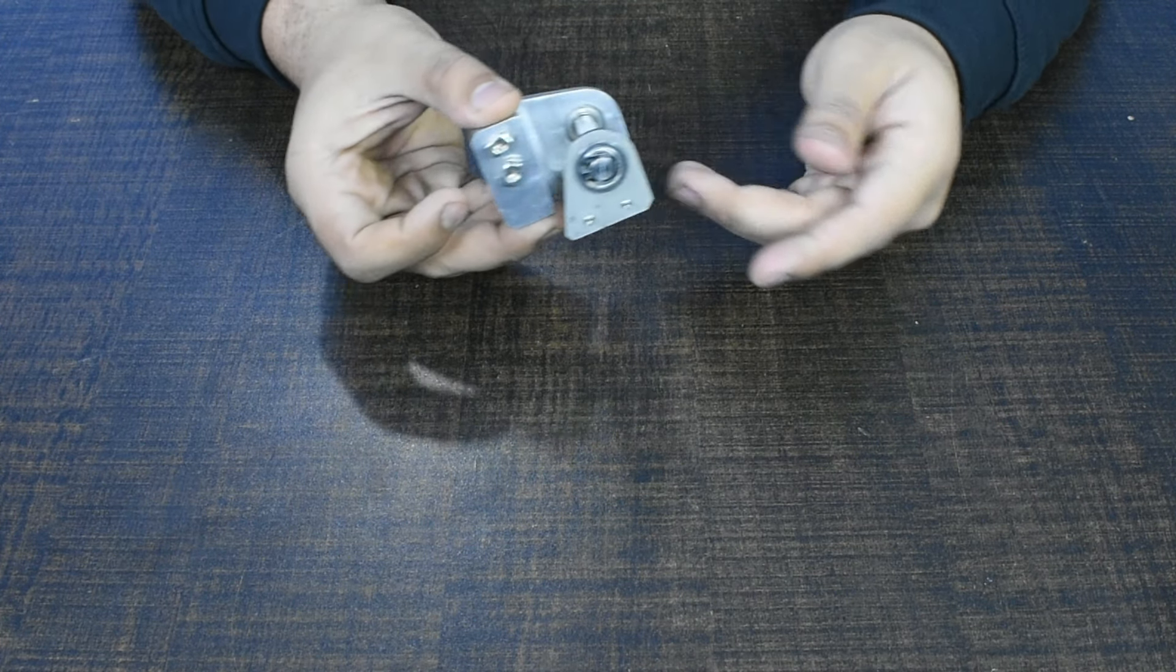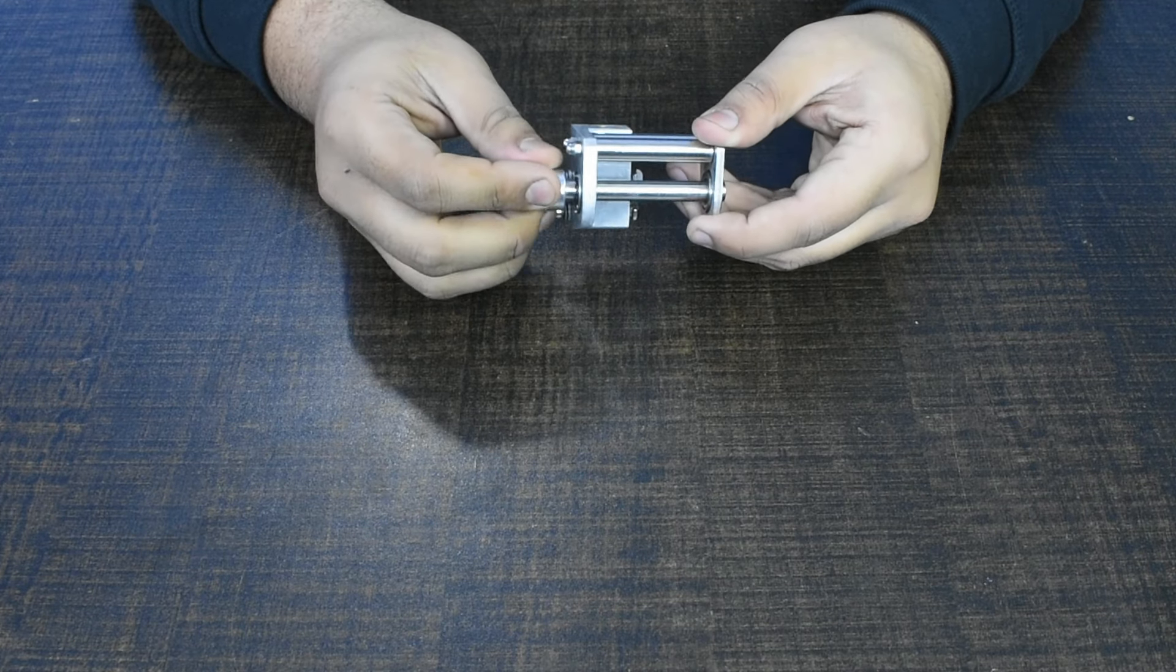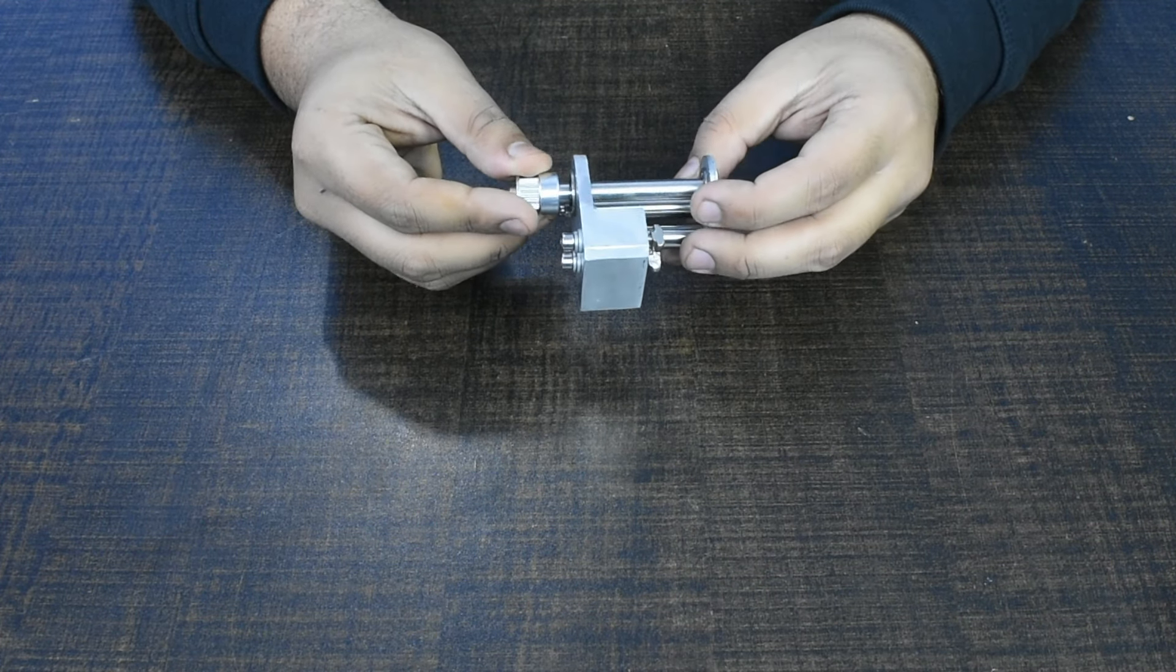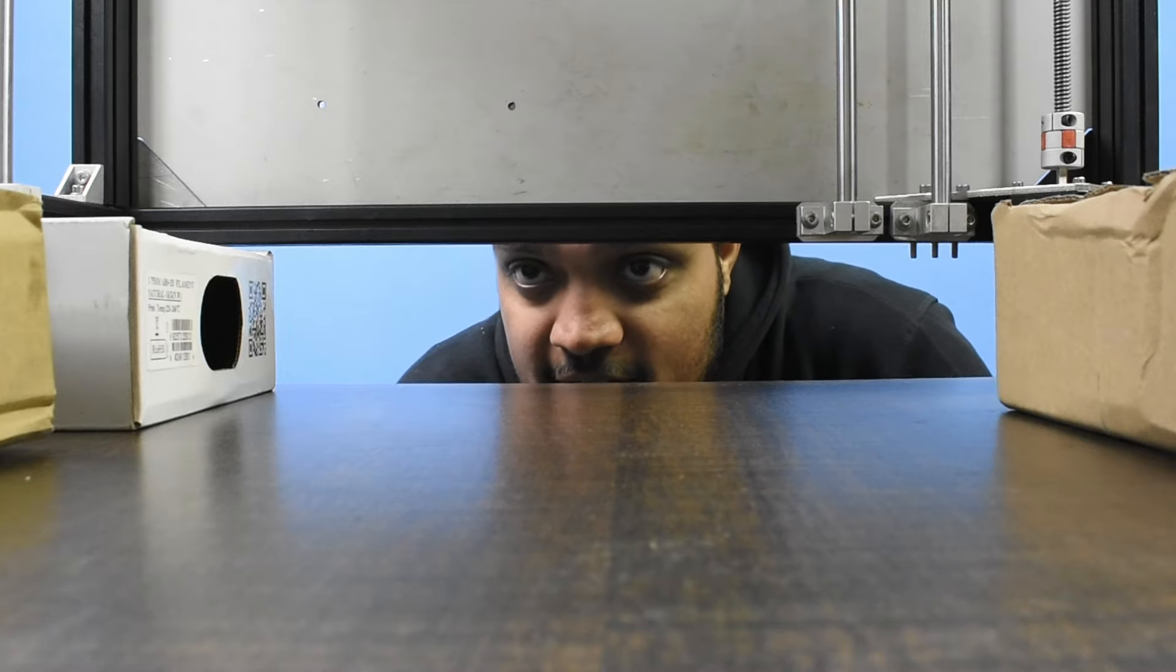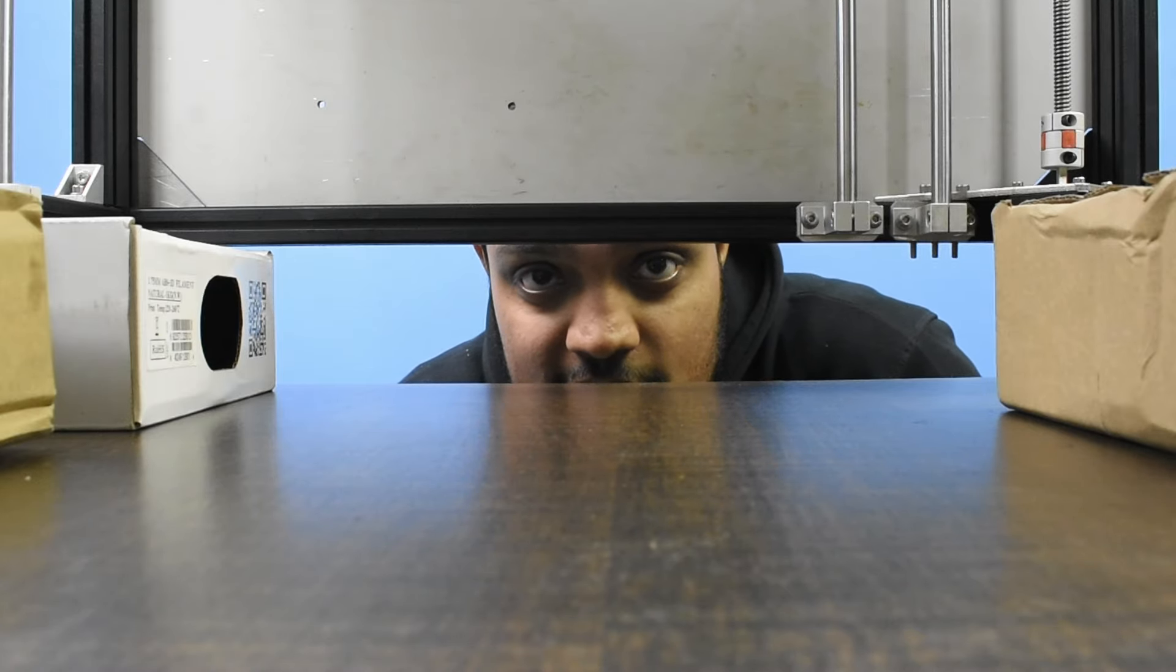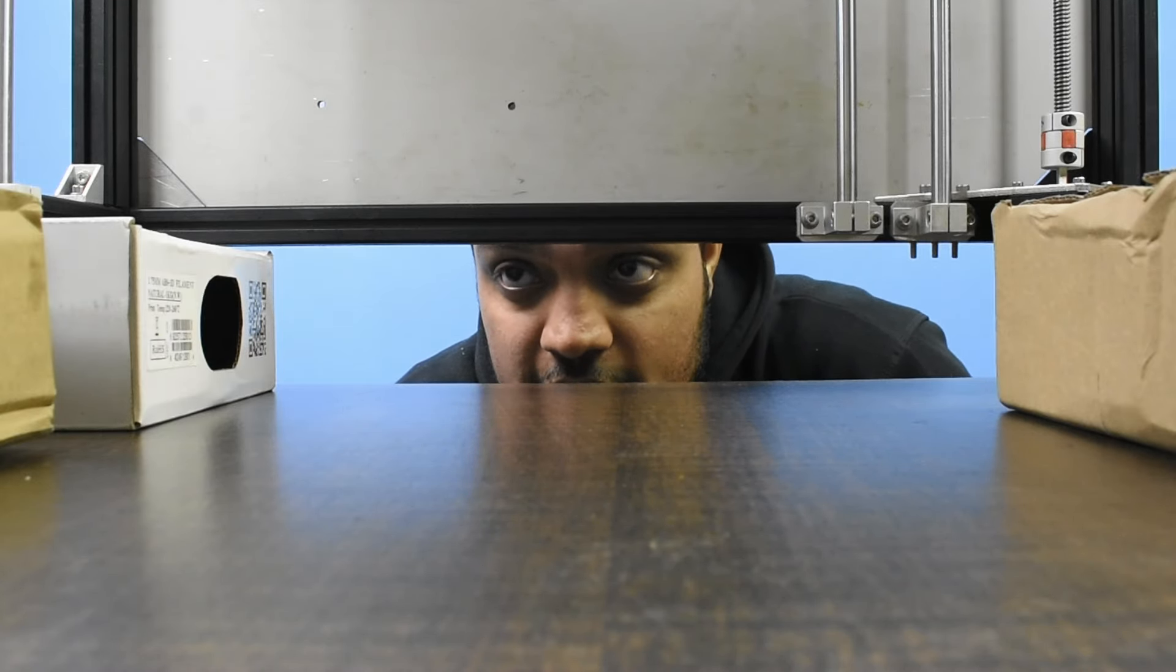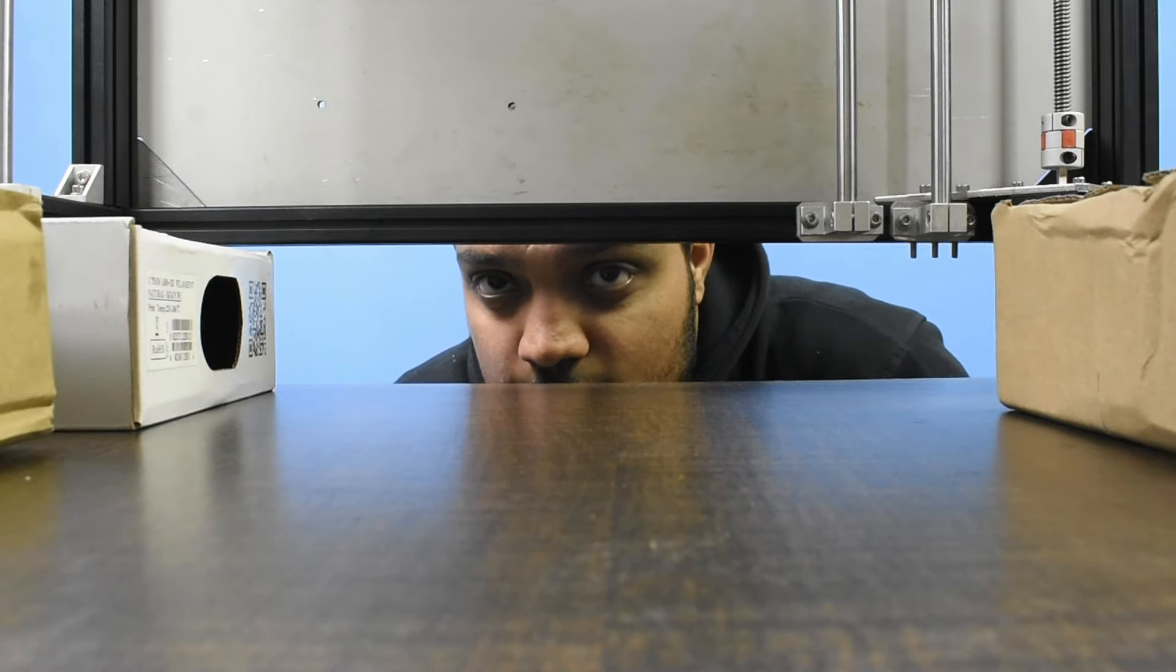And that should explain the reasoning behind this part. Now let's move on to building the machine. But before we do that, we might have a little bit of a problem. As you can see, we're using cardboard for the base of our machine, so first maybe we should get some beef for our machine.